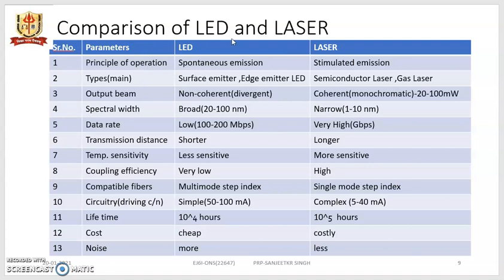Now let us see the comparison of LED and laser with respect to a number of parameters. LED stands for Light Emitting Diode, whereas laser is Light Amplification by Stimulated Emission of Radiation. The operating principle for LED is spontaneous emission, whereas for laser it is stimulated emission. The two primary types of LED are surface emitter LED and edge emitter LED, whereas for laser we have semiconductor laser or gas laser.